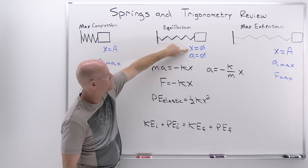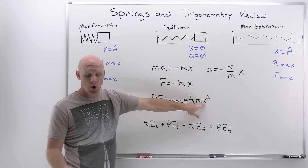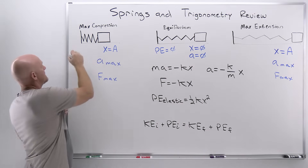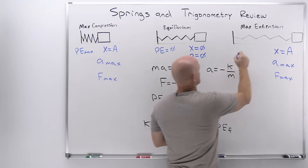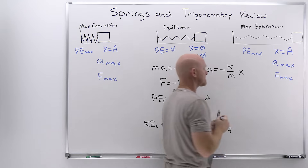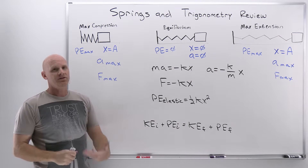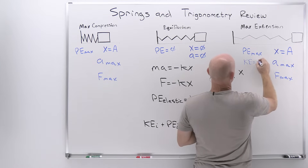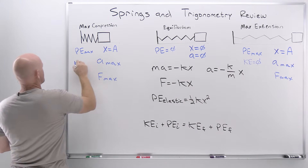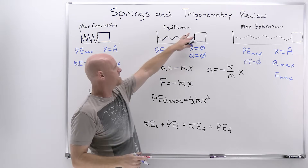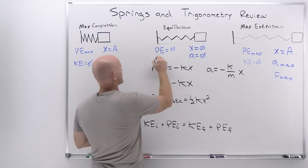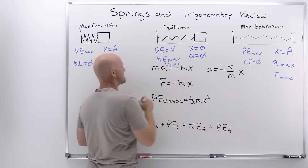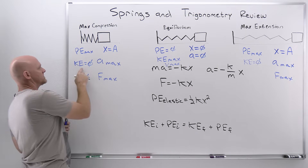At the equilibrium position where displacement is zero, the elastic potential energy is also zero. At maximum extension or maximum compression, potential energy is at a maximum. And when potential energy is at a maximum, kinetic energy is zero. Conversely, through the equilibrium position where there's no potential energy, the kinetic energy — and therefore velocity — is at a maximum.